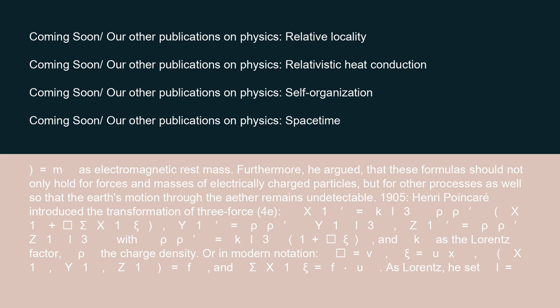1905: Henri Poincaré introduced the transformation of three-force, with rho′ equals k·L³·(1 + epsilon·psi), and k as the Lorentz factor, rho the charge density. In modern notation: epsilon equals v, psi equals ux, and (x1, y1, z1) equals f, and sigma·x1·psi equals f·u. As Lorentz, he set L equals 1.